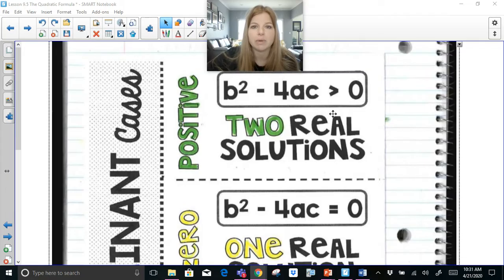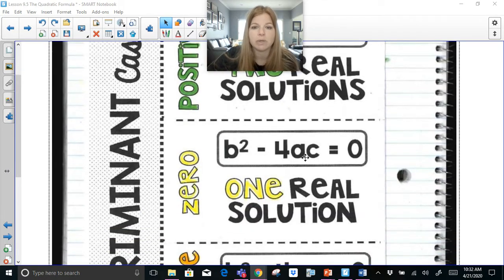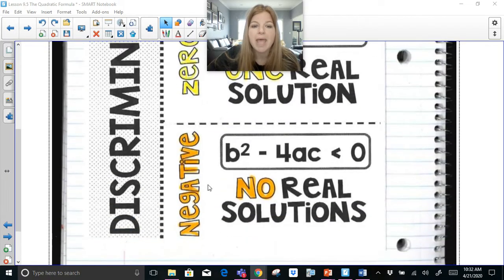Here are the three things we're going to look at. If b squared minus 4ac is greater than zero, that's going to result in two real solutions. If we get zero as the answer, that means there's only one solution. And if we get a negative value, then that would be an equation that has no solutions at all. So let's take a look together.